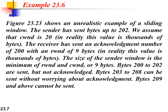In an example scenario, the congestion window size is 20 bytes. The receiver has sent an acknowledgement number of 200 with a receiver window of 9 bytes. The sender window size is the minimum of receiver window and congestion window, which is 9 bytes. Bytes 200 to 202 are already sent but not acknowledged. Bytes 203 to 208 can be sent. Bytes 209 and above cannot be sent.